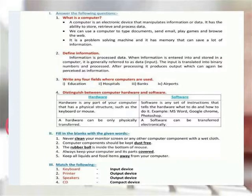Distinguish between computer hardware and software. Hardware is any part of your computer that has a physical structure, such as the keyboard or mouse. The hardware can only be physically transferred.